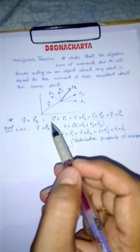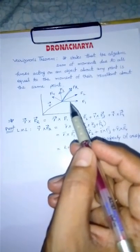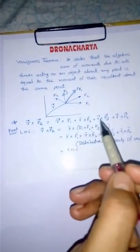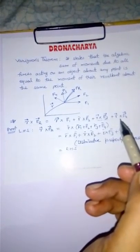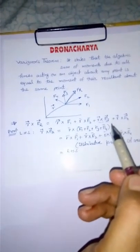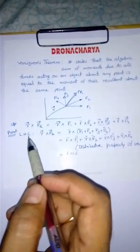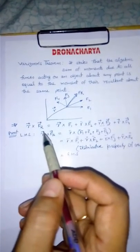So moment of the resultant is equal to summation of moment of individuals. That is r cross f1 plus r cross f2 plus r cross f3 plus r cross f4. How to prove it? It's very simple. Let us start with left hand side.